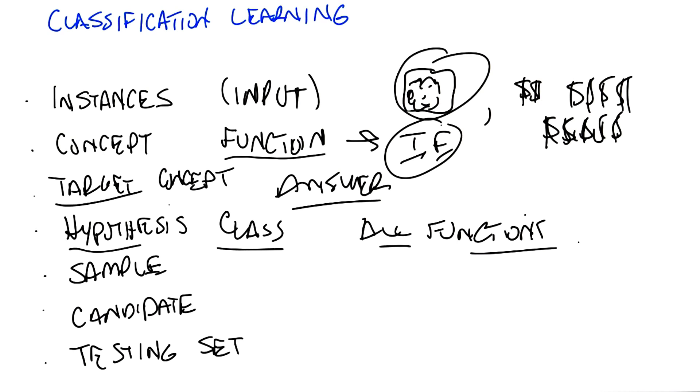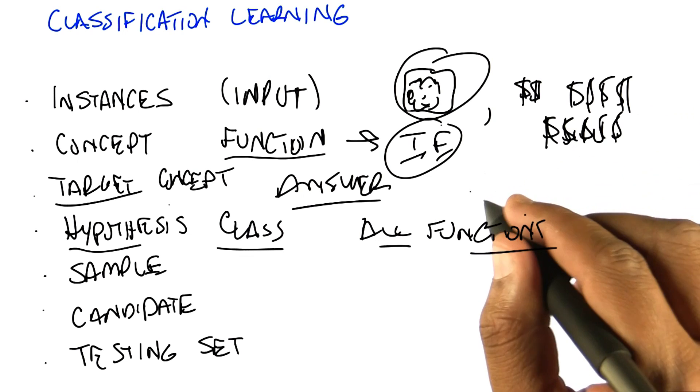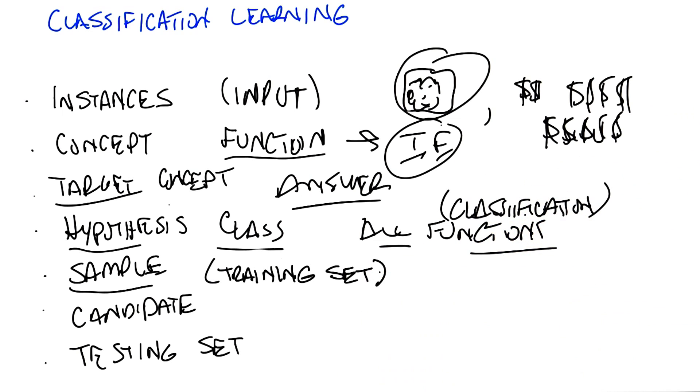And we've already said we're not doing regression, we're doing classification. So already, the hypothesis class is all functions we care about, and maybe it's all classification functions. So we've already picked a subset.